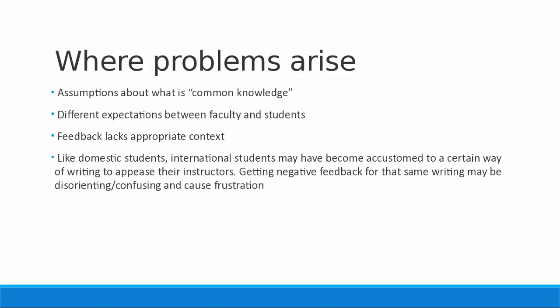Finally, like domestic students, international students may have become accustomed to a certain way of writing to appease their instructors. Growing up in the U.S. education system, by about middle school you've figured out what instructors are looking for in writing, and you've had many years to hone your writing to meet those expectations. International students are new to this education system, and getting poor feedback for writing that may have gotten them good grades in their own culture may cause a lot of frustration, or even be disorienting. So it's important to be patient and accommodating with students who are learning new ways to be a student.